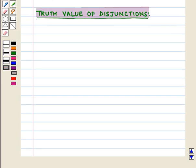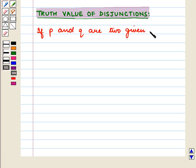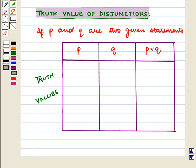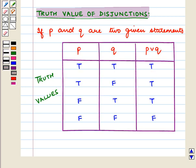Now let us discuss the truth values of disjunctions. If P and Q are two given statements, then if both statements P and Q are true, their disjunction P ∨ Q is also true. That is, if the truth value of P is T and the truth value of Q is T, then the truth value of P ∨ Q is T.